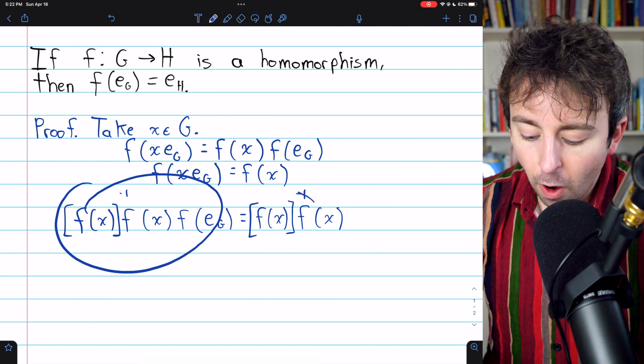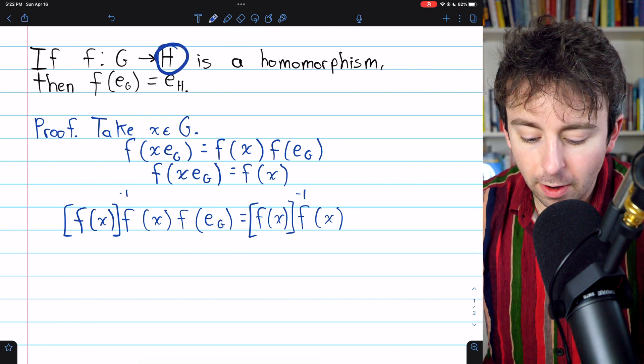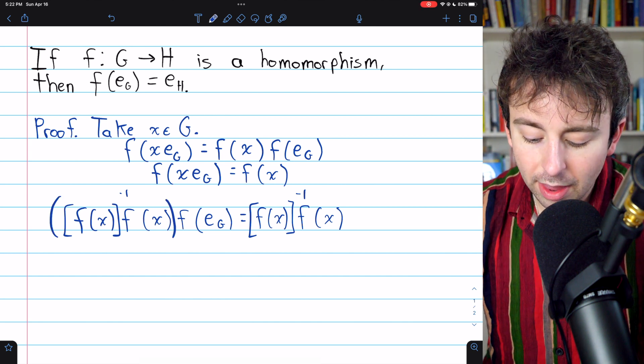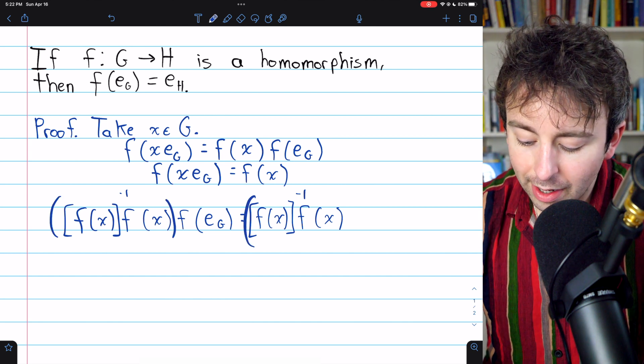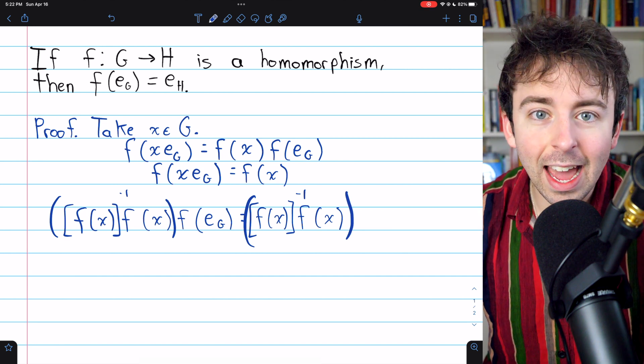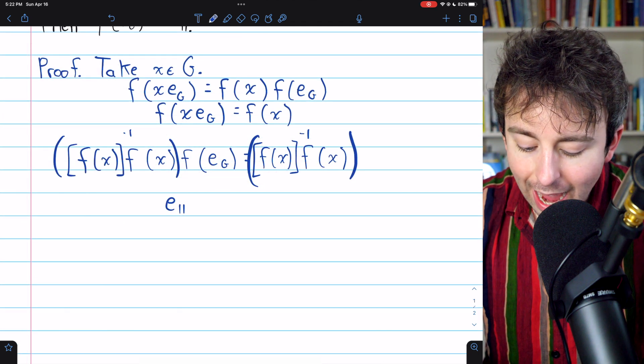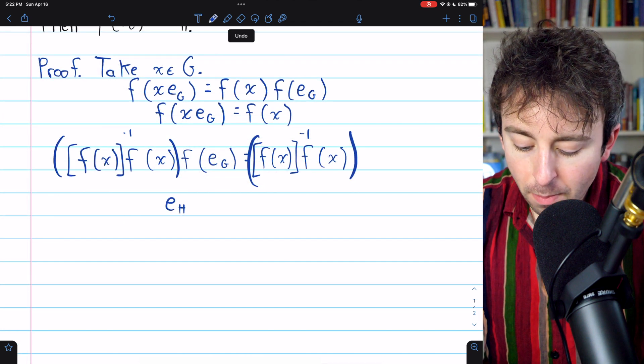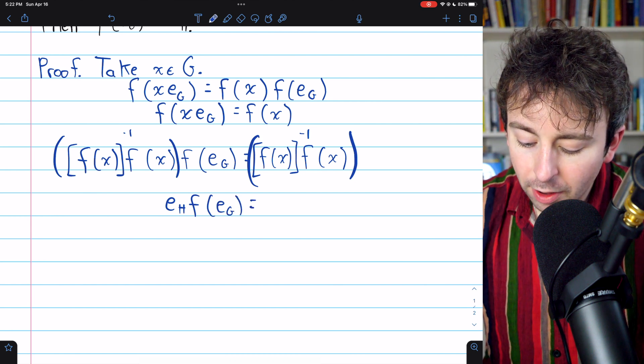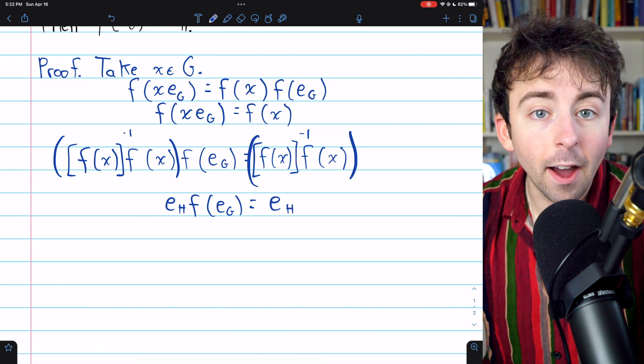Now, of course, all of these are elements of our group H. So the operation here is associative, and we can combine f of x inverse with f of x. In both cases, it gives the identity element of H. So on the left side of the equation, we have the identity element of H multiplied by f of e_G. And on the right side, we of course also have the identity element of H.